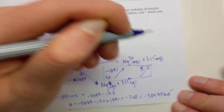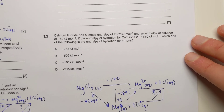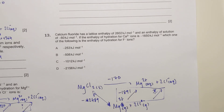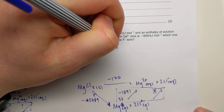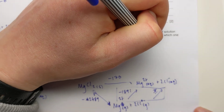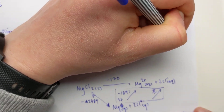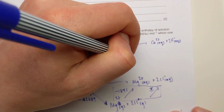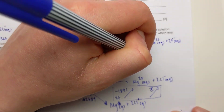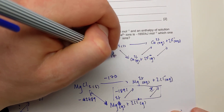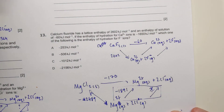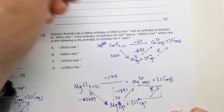The final question uses calcium fluoride. Given: lattice enthalpy = 2602, enthalpy of solution = minus 60, enthalpy of hydration for Ca²⁺ = minus 1650. We need the enthalpy of hydration for F⁻ ions. The cycle is: CaF₂ ionic compound → Ca²⁺(aq) + 2F⁻(aq), split into gaseous ions via lattice enthalpy, then hydrated to form the solution. The missing value is the fluoride hydration enthalpy.